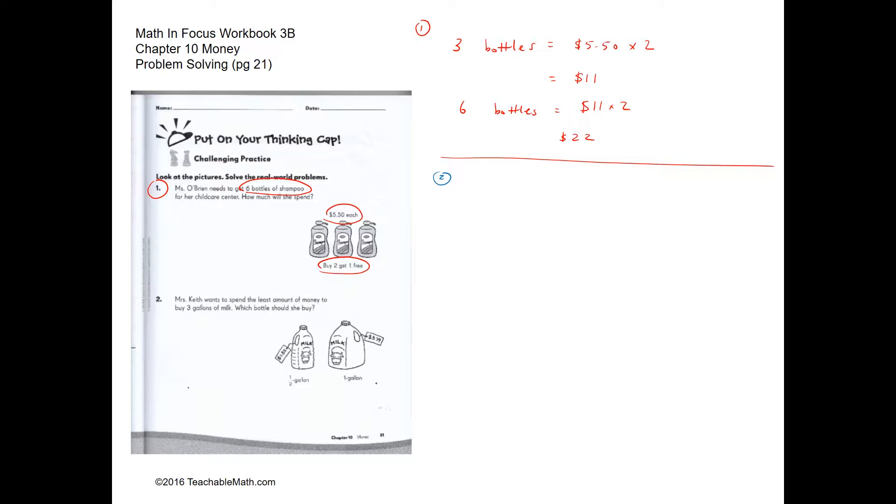Now for question two, we want to spend the least amount of money for three gallons of milk. So if we're getting two half-gallon bottles, we will be paying $1.85 times two.